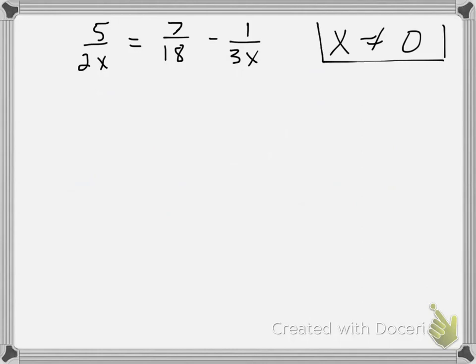Now we need to figure out what we're going to multiply every fraction by to get rid of the fractions. So we have a 2x, we have an 18, and we have a 3x. Okay, so recall we are just going to try to multiply numbers or see if there's a number that everything divides into.